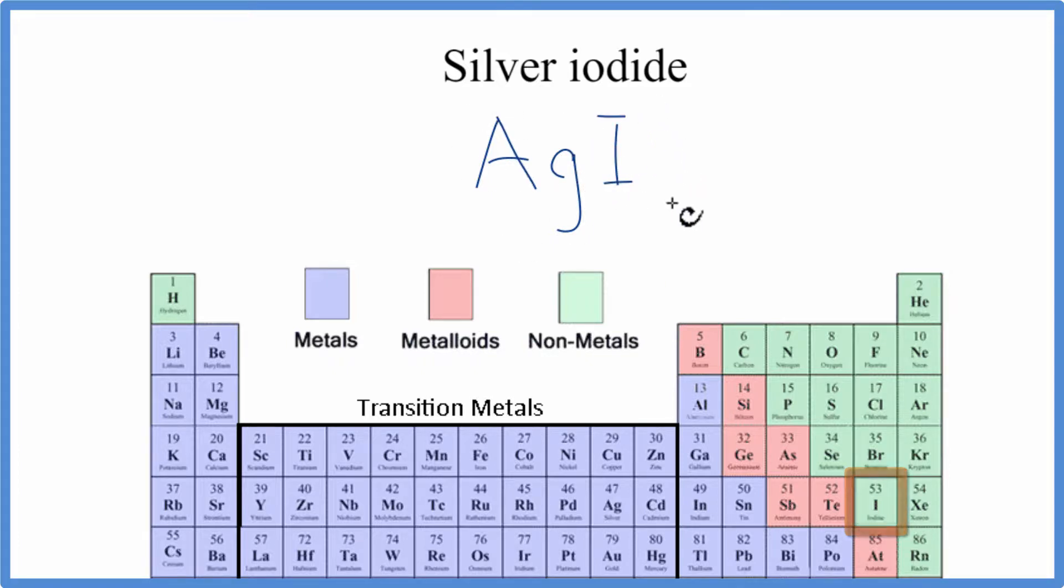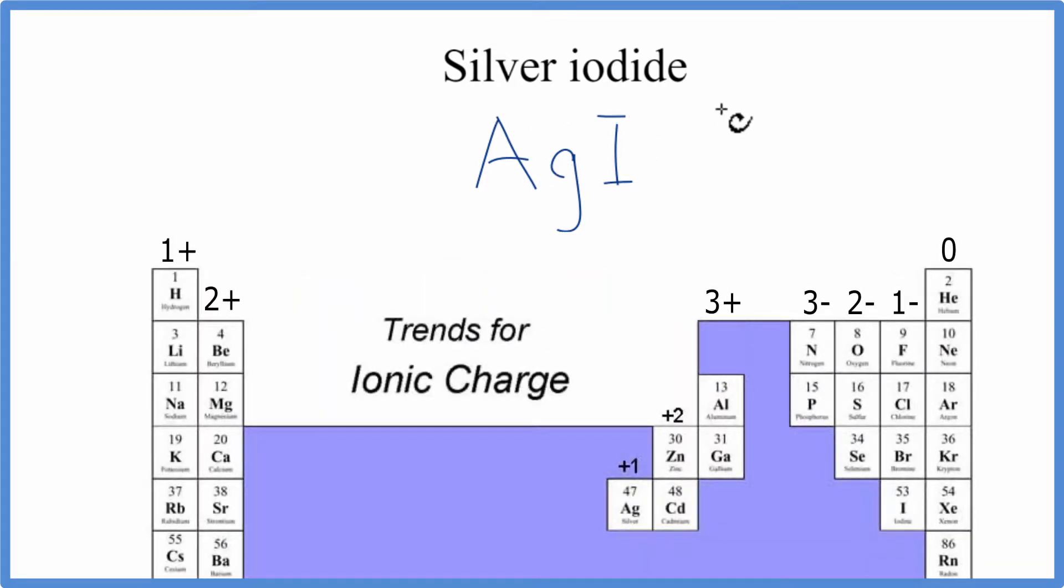Silver is a metal, iodine is a non-metal. When we have a metal and a non-metal, we have an ionic compound, and we need to think about the charges on each of the elements when we write the formula for silver iodide.